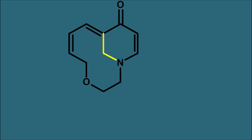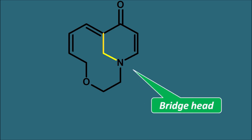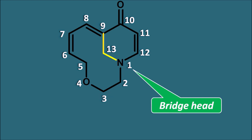Focusing on the yellow bridge, this compound is a bicyclo compound. For bicyclic ring systems we have to start the numbering from the bridge heads. This is one bridge head and the other terminal of the yellow bond is the other bridge head. The nitrogen should be given more preference, so we start numbering from that bridge head: 1, 2, 3, 4. We give the least number to the heteroatom, so oxygen gets position 4. Continuing: 5, 6, 7, 8, 9, 10, 11, 12. We first complete the numbering for the two ring systems, then give the number to the bridged atom — position 13.